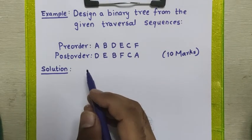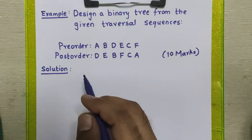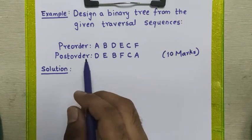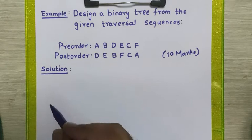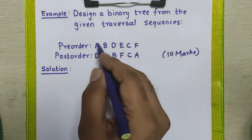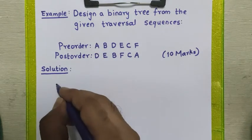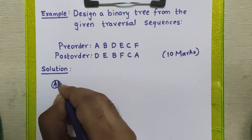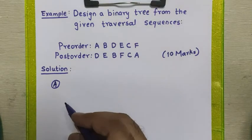As we know, in pre-order sequence the root node always comes at the beginning. So it is very easy for us to get the root node from the pre-order sequence. We can say that A is the root node of this tree. We will draw this node in the solution first — this is the root node of the tree.